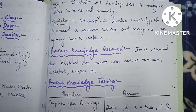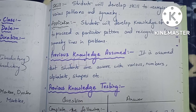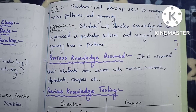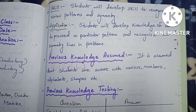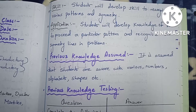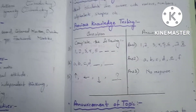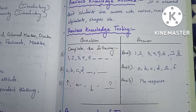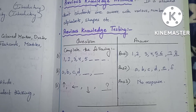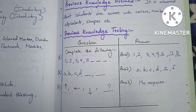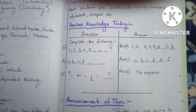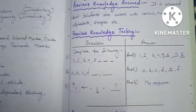Instructional objectives are to create knowledge, understanding, skill, and application of patterns and symmetry in daily life. Previous knowledge assumed is that students are aware of various numbers, alphabets, shapes, etc.